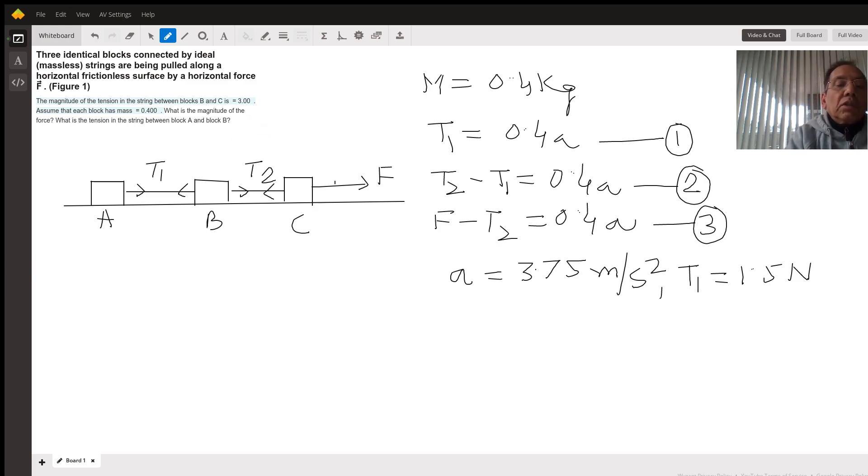T2 is 3 Newtons, and we have to find the tension T1. For that, we need the acceleration of the system. All three masses are connected, each mass is 0.4 kilograms, so the acceleration of each mass is the same.